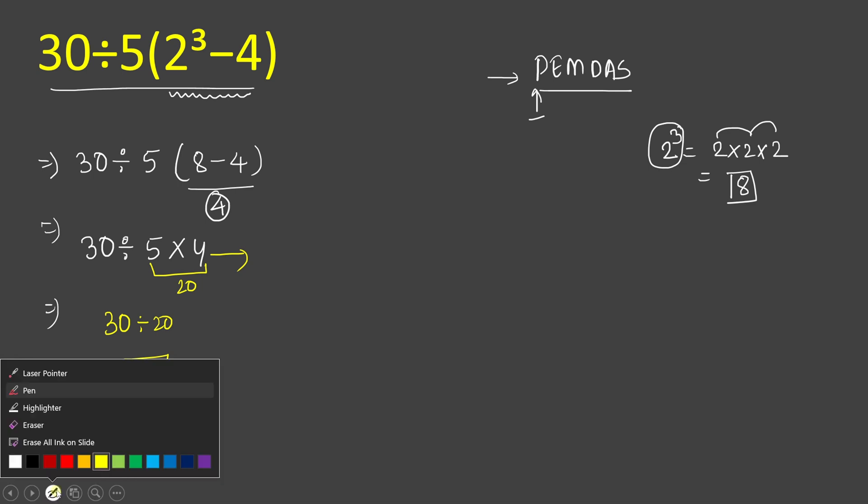Here we will rewrite 30 divided by 5 times 4. This is our expression and here we will use multiplication division left-to-right rule. Because as we know, multiplication and division have the same precedence and we have to solve left to right. According to this rule we have to solve first this division part.